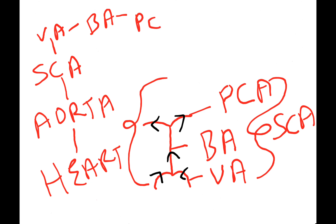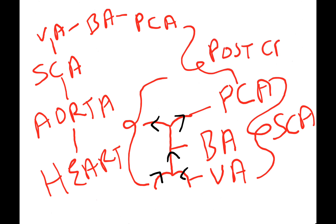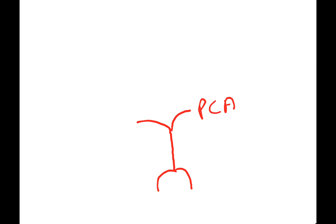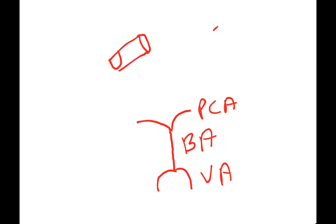From here comes the posterior cerebral artery. All of this is the posterior circulation of the Circle of Willis. Let's draw it again: this is the basilar artery, this is the vertebral artery, this is the posterior cerebral artery.